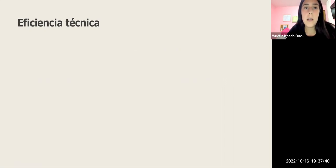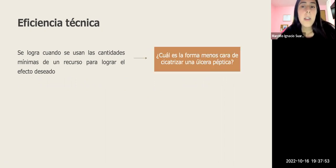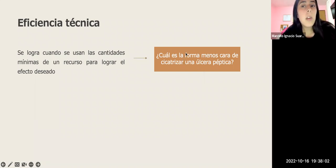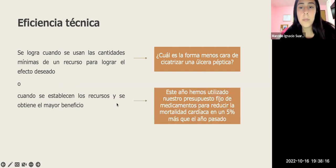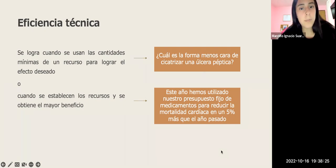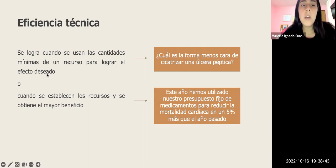Un ejemplo de eficiencia técnica sería: ¿cuál es la forma menos cara de cicatrizar una úlcera péptica? Ahí estamos aplicando eficiencia técnica, queremos lograr algo utilizando el menor precio posible. También puede aplicarse cuando se establecen recursos fijos y queremos obtener el mayor beneficio posible; por ejemplo, usar un presupuesto fijo de medicamentos para reducir la mortalidad cardíaca en un 5% más que el año pasado.